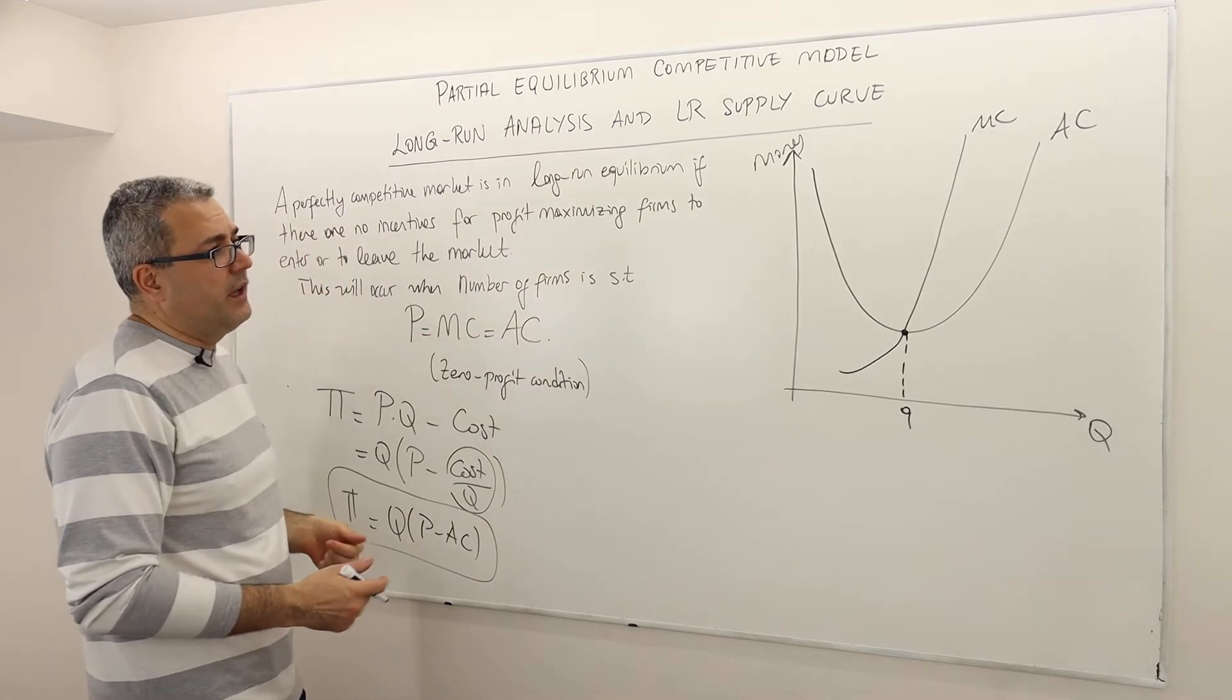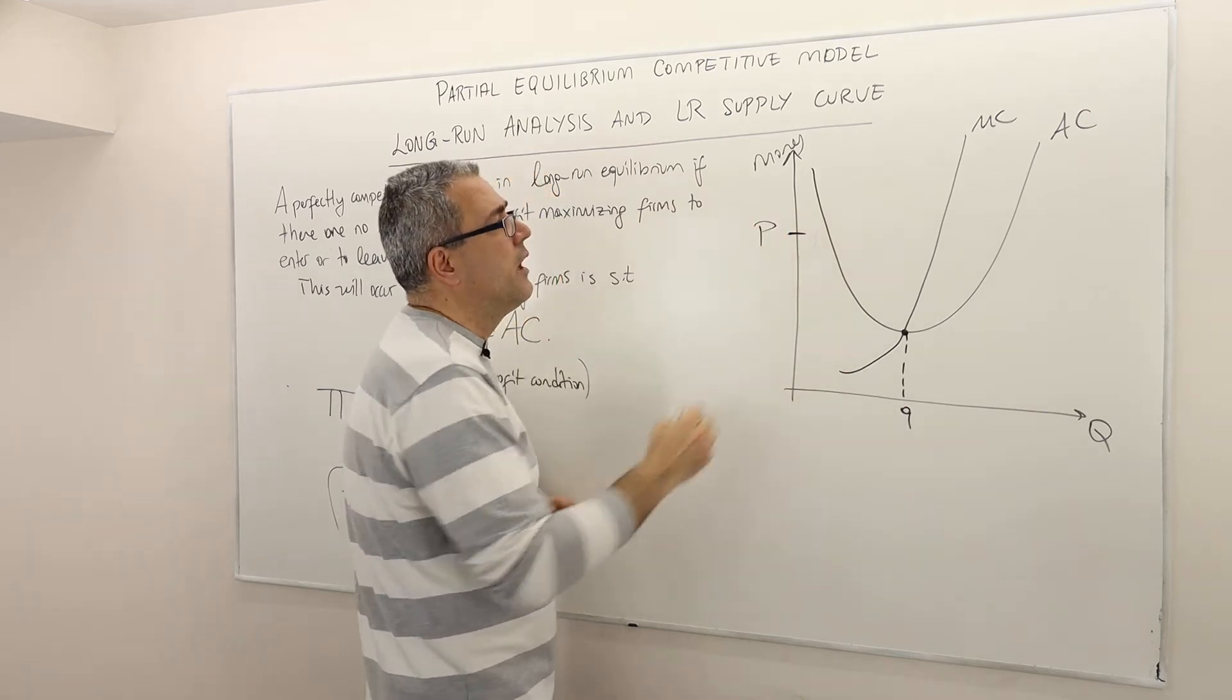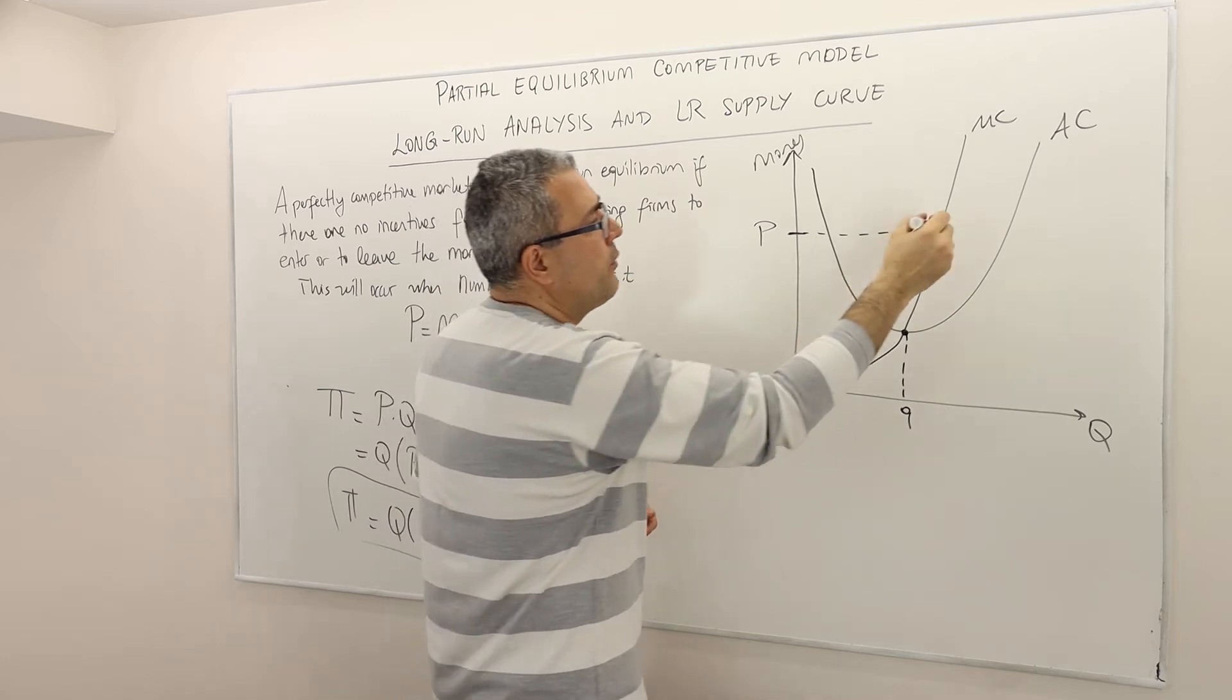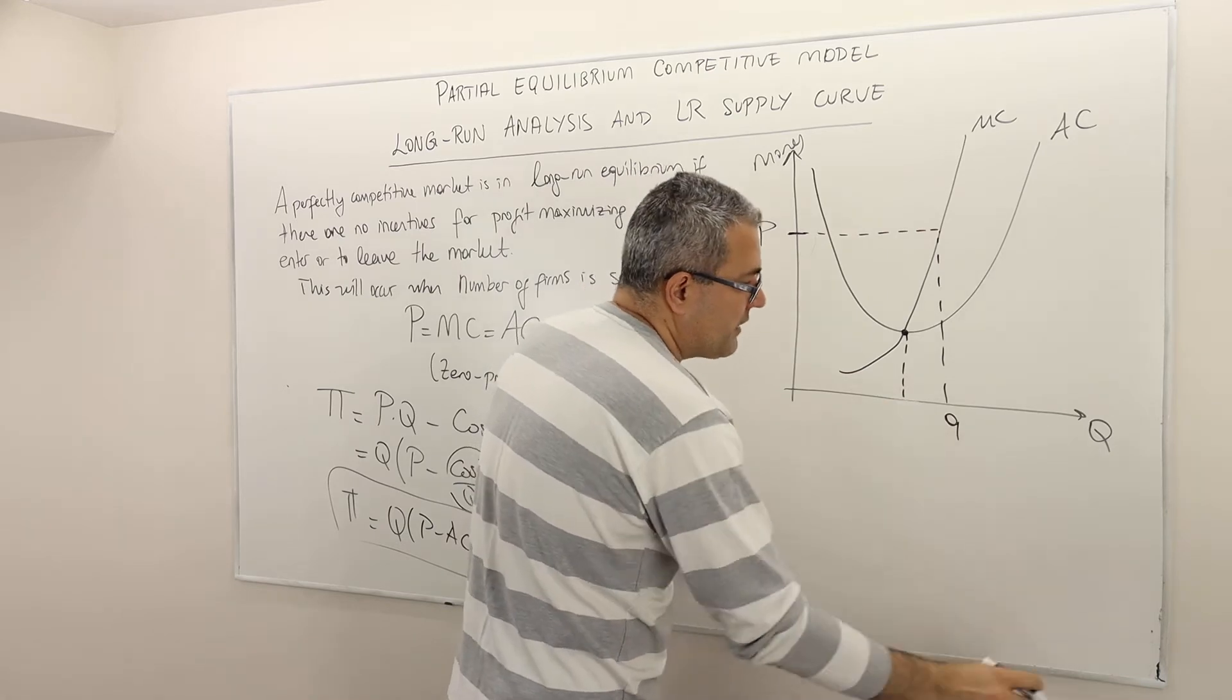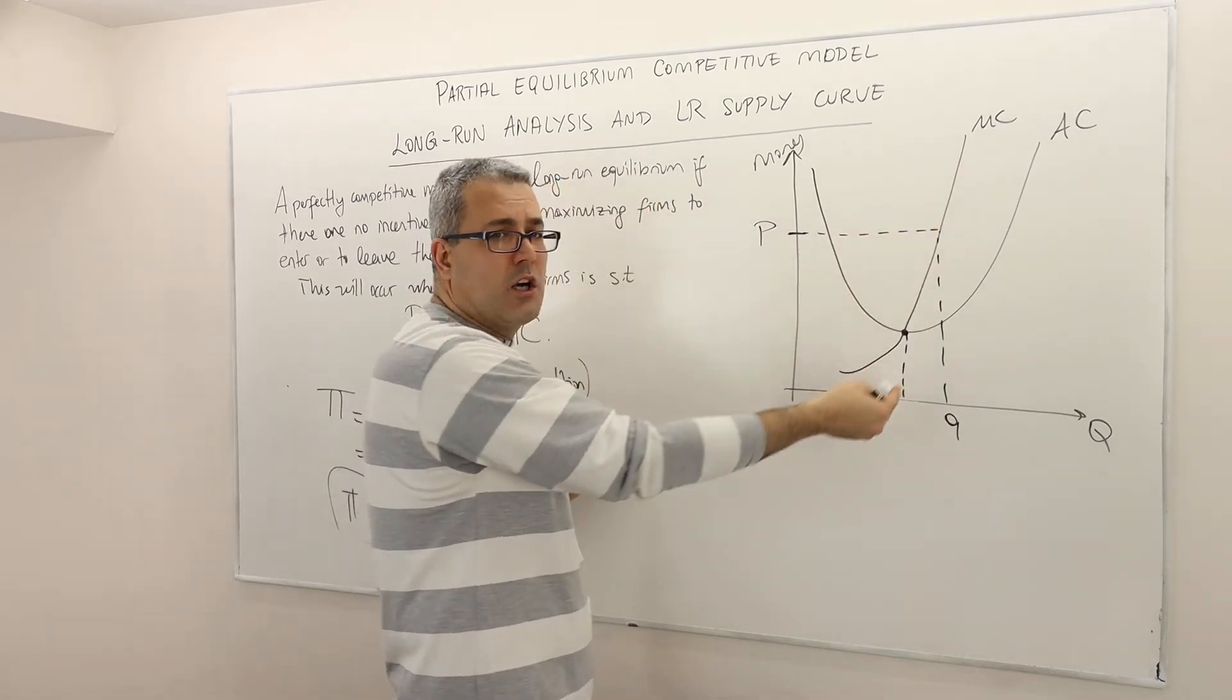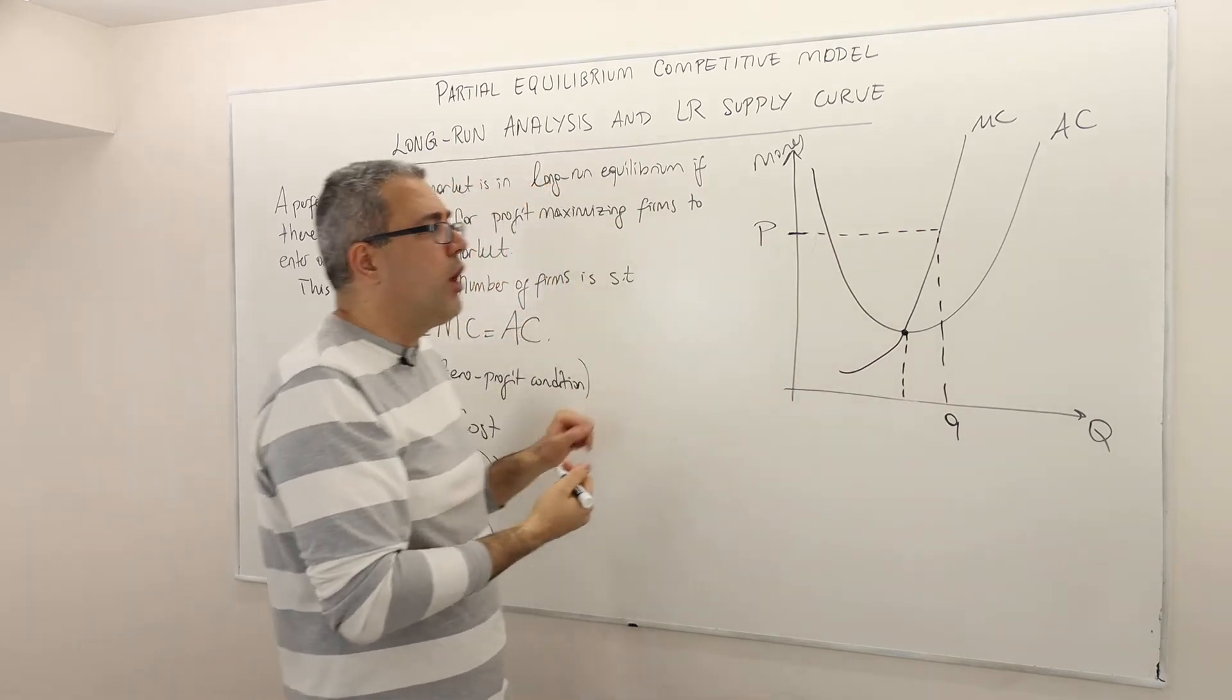So here's the thing. What do I have here? Let's suppose this is the market price. If this is the market price, I know that this individual firm is going to produce exactly this much quantity. So this is how much this firm is going to produce, because its marginal cost is its supply curve.